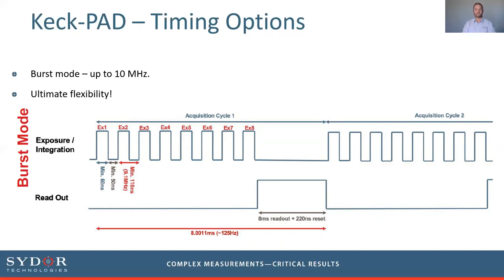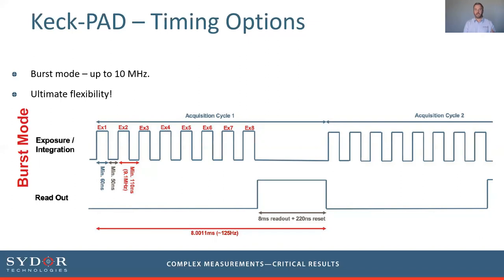One option, shown on screen, is to access the fastest rates possible: burst all eight frames at up to about 10 megahertz, then read out the data. That readout happens at around eight milliseconds, giving a cyclic refresh rate where we move on to the next burst of eight frames at around 100 hertz.